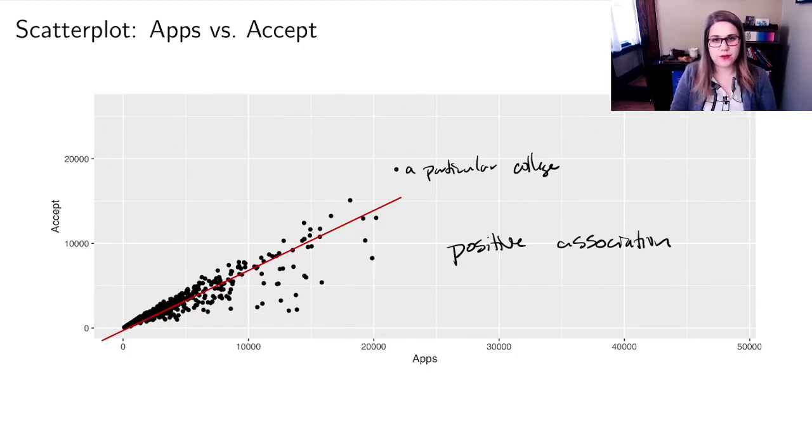When you talk about the strength of association, it could be weak, moderate, or strong. I would probably put this to be moderate to strong. It's not the strongest association I've seen, but it's at least moderate. I can see there's a pretty clear trend.